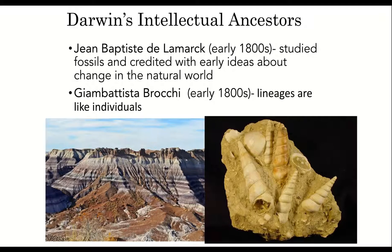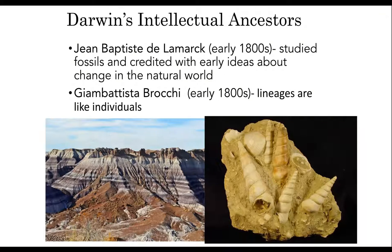Jean-Baptiste de Bracchi was an Italian geologist who observed geological formations like mountains in Italy, whose gradual eruption revealed distinct layers of time once buried underground. Bracchi surmised that one lineage can give birth to another, and that lineages were like individuals. A lineage of organisms might appear in one layer of earth, then die out and be replaced by something similar in a more recent layer or stratum.